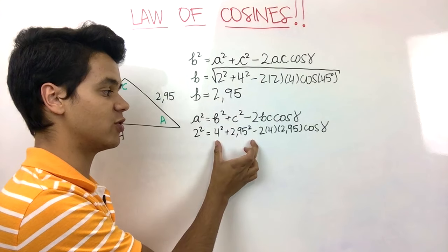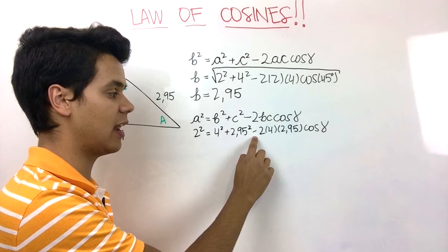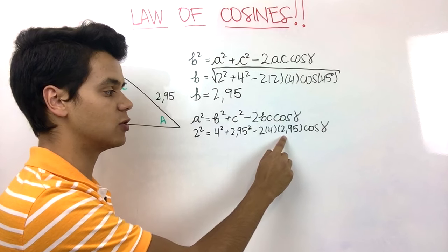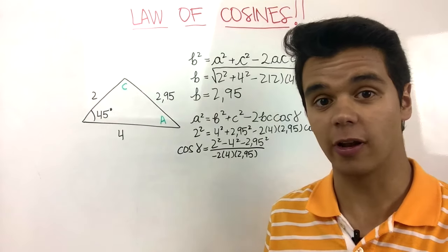2 squared, we have to subtract this 2, we have to divide it by negative 2 times 4 times 2.95. We end up with something like this.